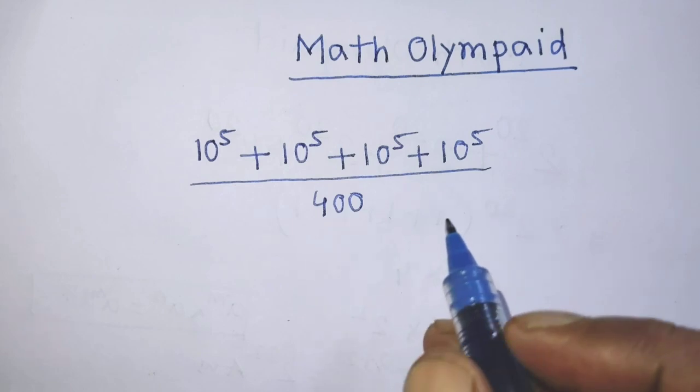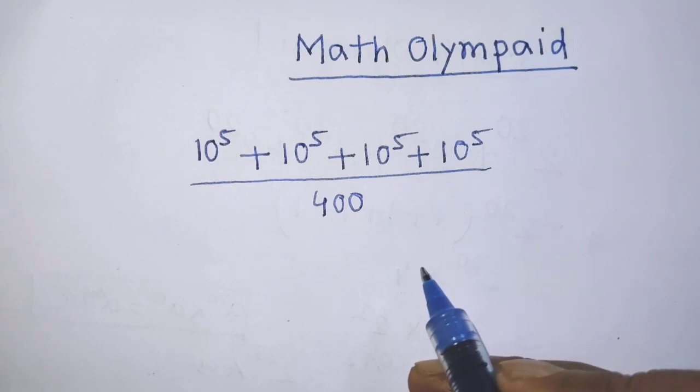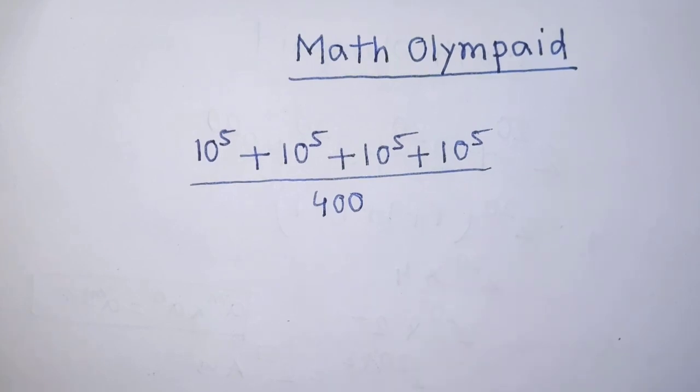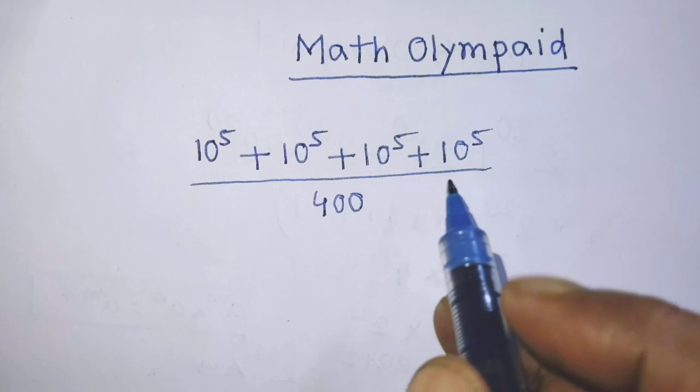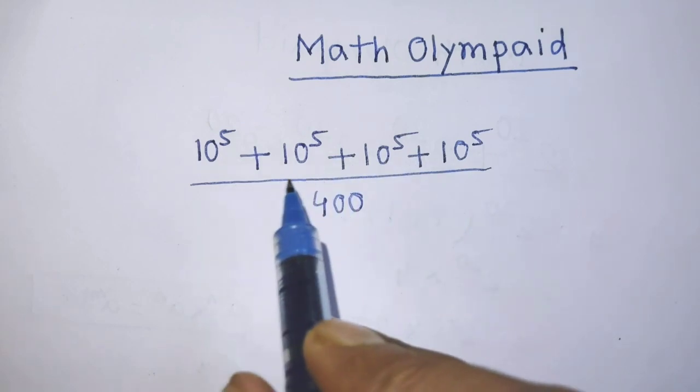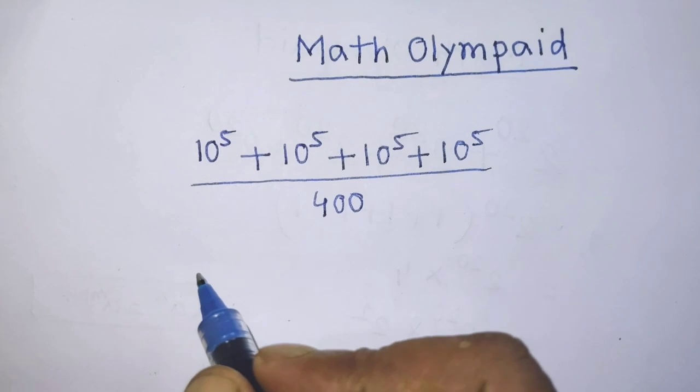In this fraction, in the place of numerator, there are four terms and the common factor of four terms is 10 to the power 5.